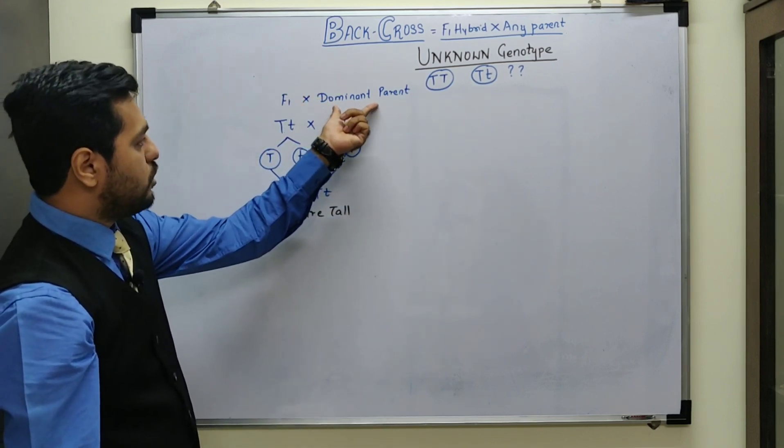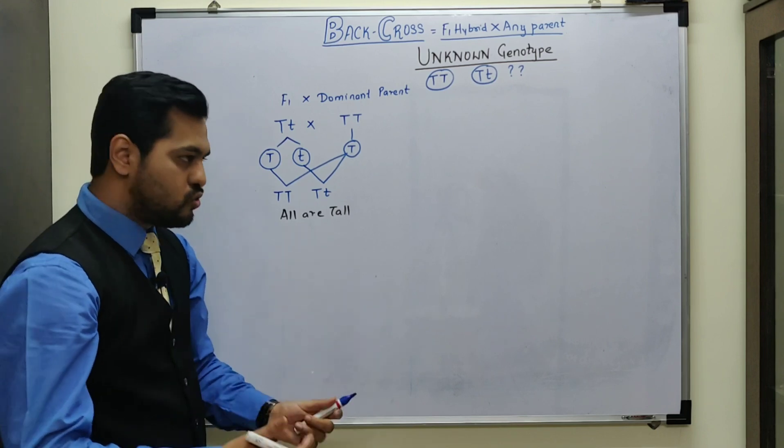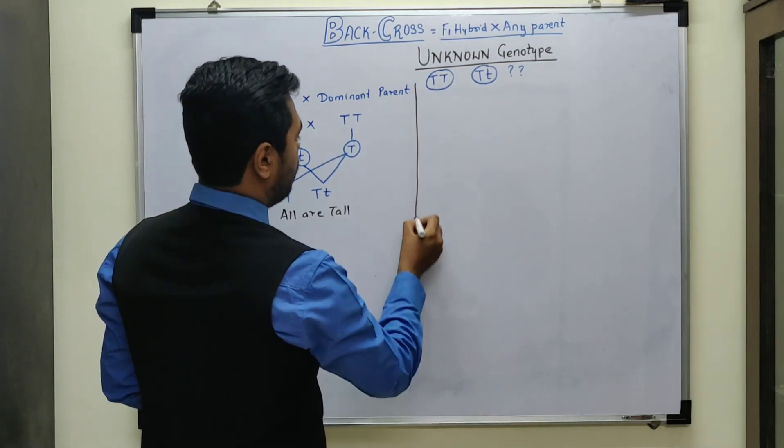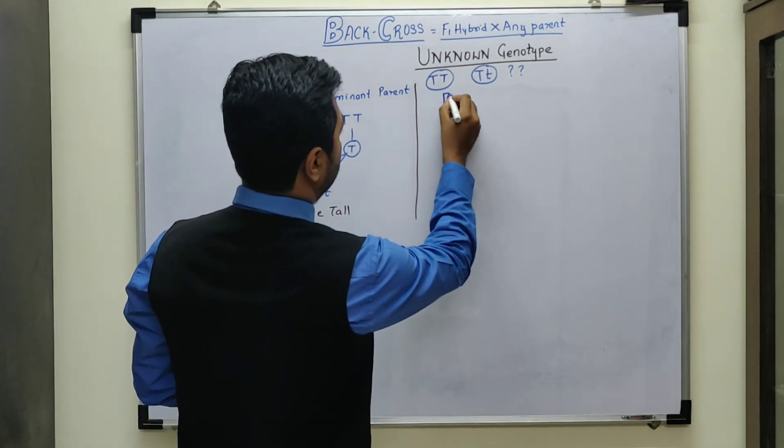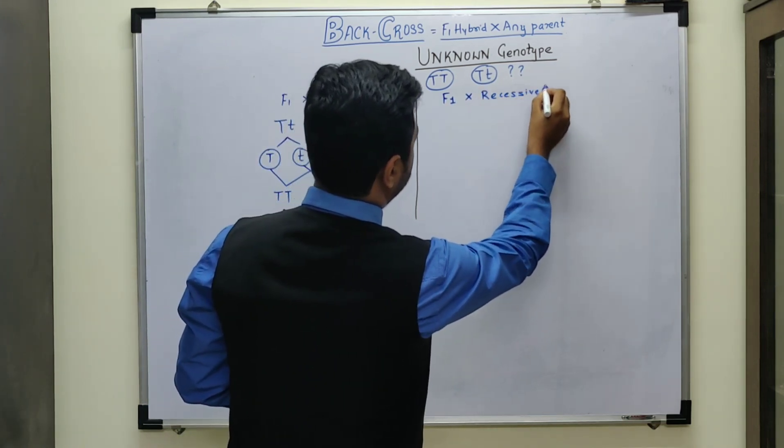In this back cross, doing with the dominant parent, the conclusive result is not obtained. So in the next set of experiment, what we are going to do is, we are going to cross the F1 hybrid with the recessive parent. So let us do that.